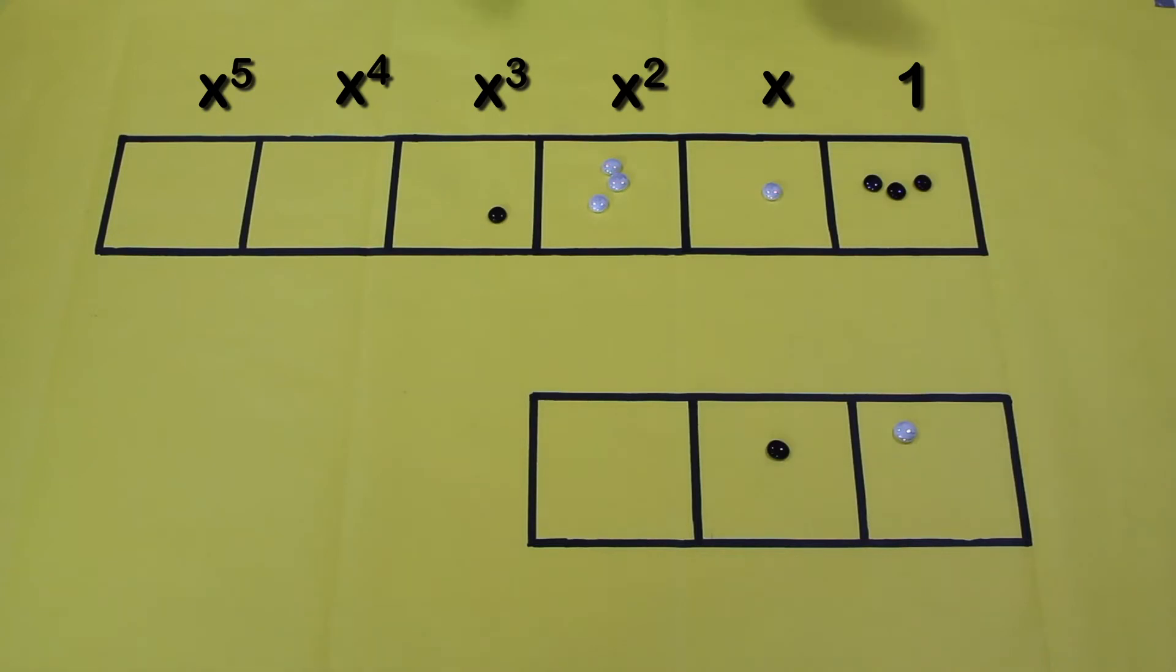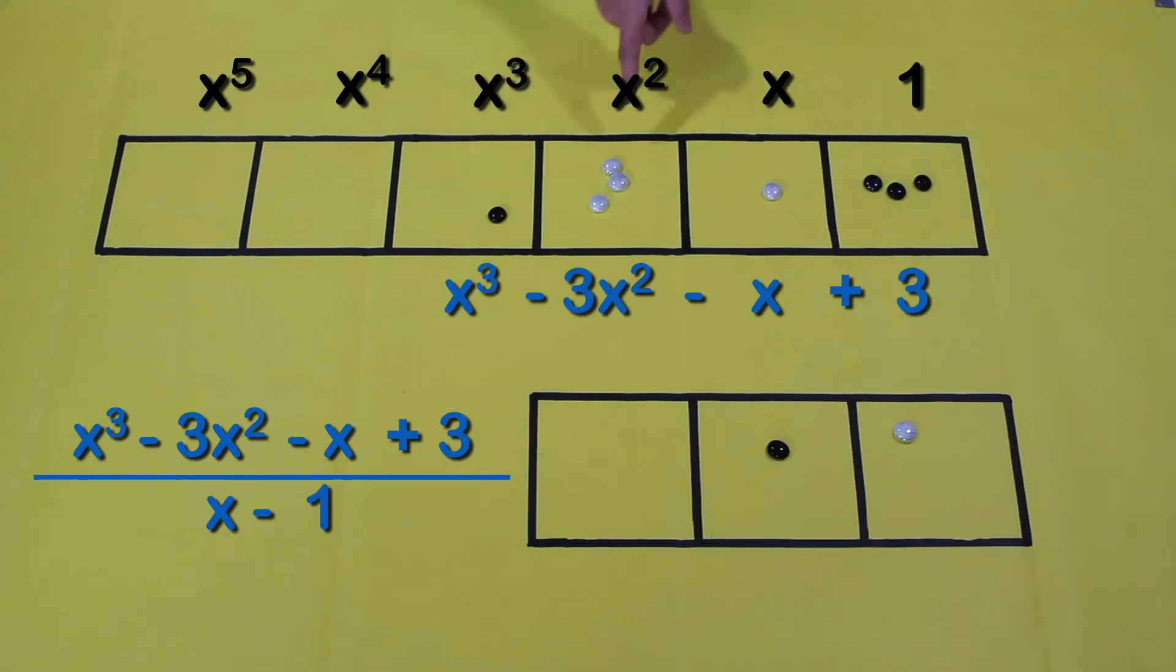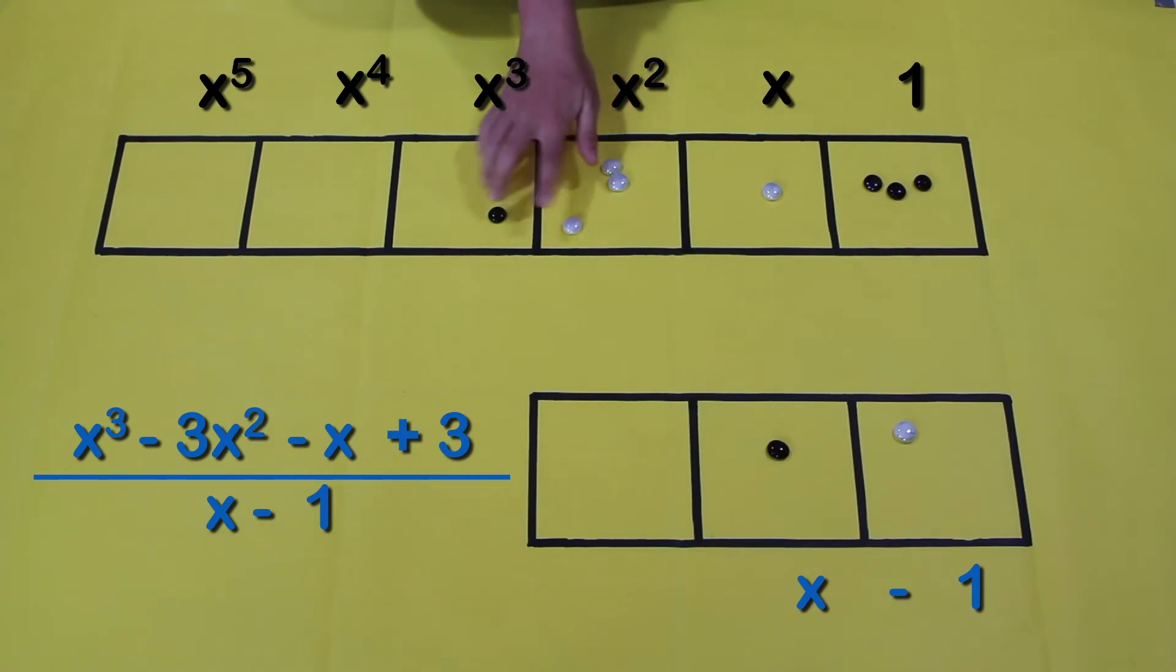All right, new problem. The top is x³ - 3x² - x + 3 and that's being divided by x - 1. So let's do what we did before and find the pattern in the bottom and repeat it in the top.